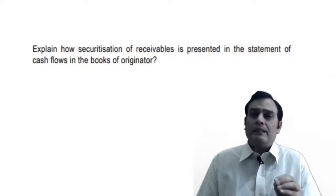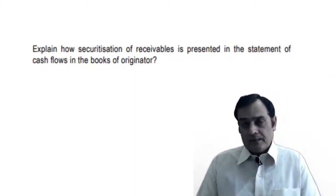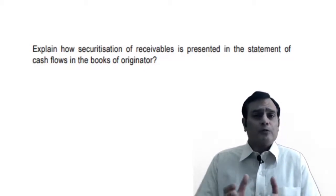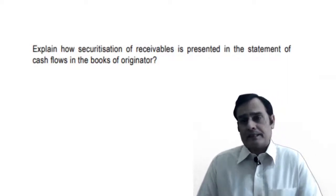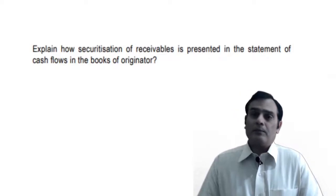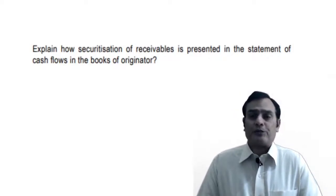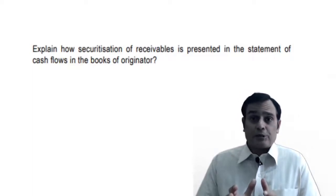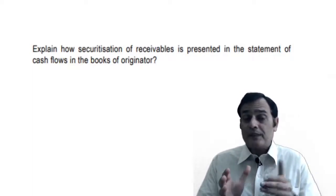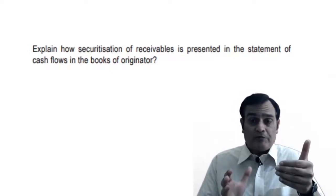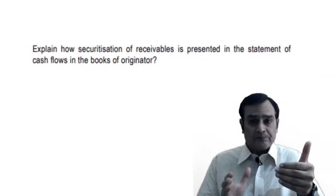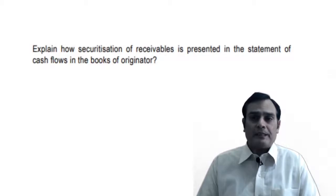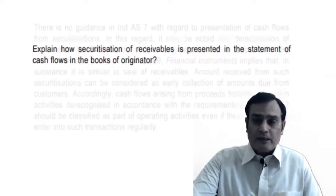On the other hand, if as per Ind AS 109 it is not eligible for derecognition, then you are going to reflect a liability instead of derecognizing an asset — because when financial assets are not eligible for derecognition, they are recognized as a financial liability. In that case it becomes a financing activity. In a nutshell: if the securitization is eligible for derecognition, it's an operating activity; if it is not eligible for derecognition, it is considered a financing activity.